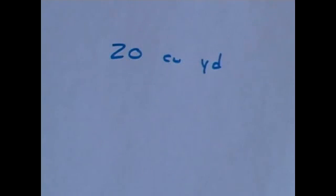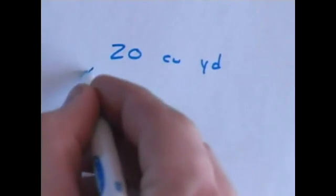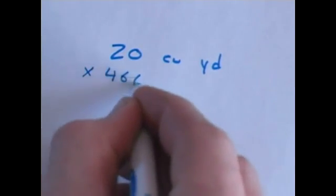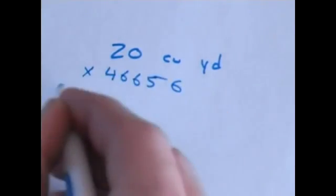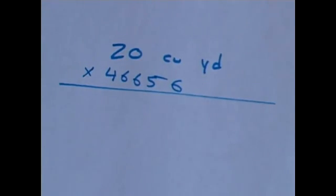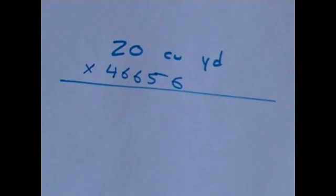And if for some reason you need to convert cubic yards into cubic inches, you need to take your cubic yardage, multiply that by 46,656, and that's going to give you your cubic inches.